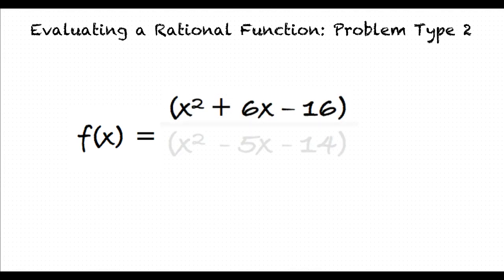What's a rational function? A rational function is defined as the quotient of two polynomial functions, just as a rational number is the quotient of two numbers. For example, f of x equals x squared plus 6x minus 16, all over x squared minus 5x minus 14.